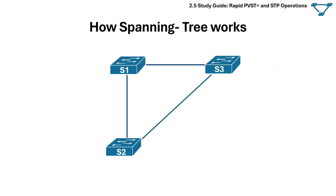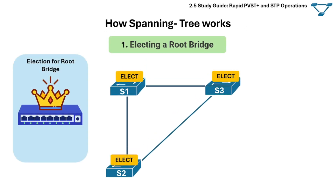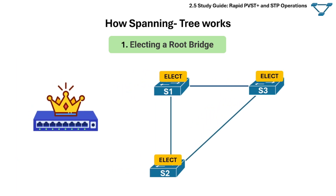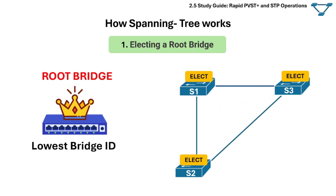STP performs a couple of steps to make sure the topology is loop-free. The very first thing STP does is elect a root bridge — the most important switch in the topology and the root of the loop-free tree. Switches elect a root bridge based on a value called the bridge ID. The switch with the lowest bridge ID value is elected the root bridge.